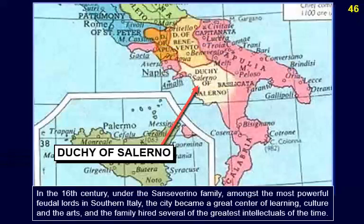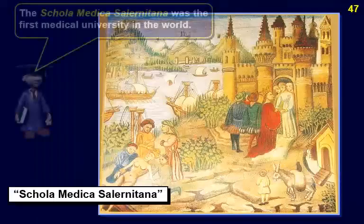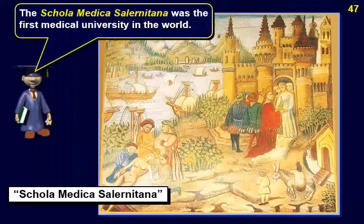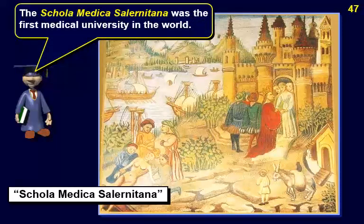In the 16th century, under the Sanseverino family — among the most powerful feudal lords in southern Italy — the city became a great center of learning, culture, and the arts. The family hired several of the greatest intellectuals of the time. Salerno is known for its Scuola Medica Salernitana, the first medical university in the world.